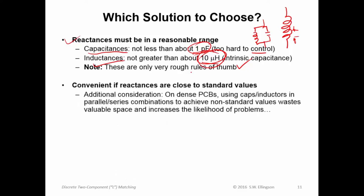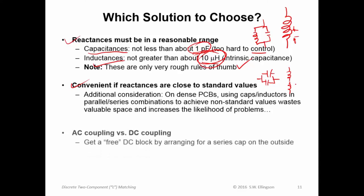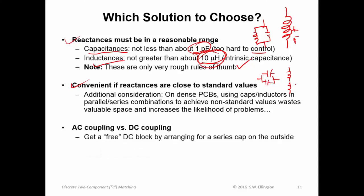Second consideration: obviously, it's convenient if reactances are close to standard values. That is, if capacitors have values that are standard for capacitors and inductances have values which are close to standard for inductors. What tends to happen is if you have to try to reach non-standard values using standard value capacitors and inductors, you end up doing things where you have things in parallel or inductors in series, and that takes up more space on the circuit board. It creates problems related to electromagnetic compatibility. You're consuming valuable board space, and so on.